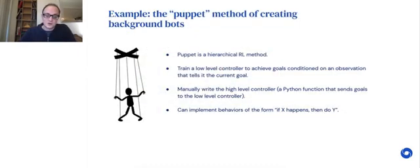You can train background populations by whatever method you want. We tried lots of different things. The most interesting one is this method we're calling the puppet method. Puppet is a hierarchical reinforcement learning method. What you do is you train a low-level controller that knows how to achieve goals—you can think of those as options if you want. They're conditioned on an observation that tells it its current goal. We train it in a setting where it's just constantly changing goals. Then we manually write a high-level controller, which in this case is a Python function that just sends the goals to the low-level controller.